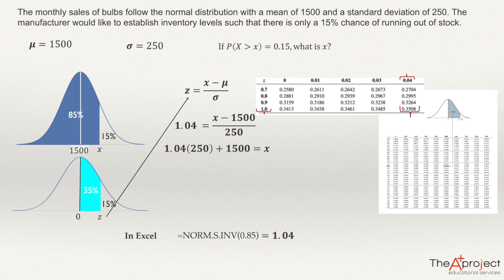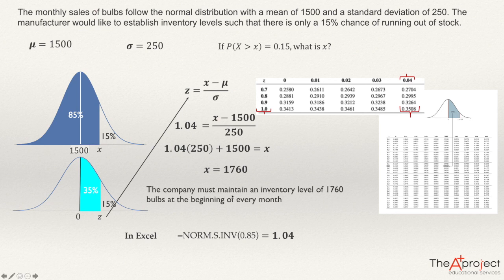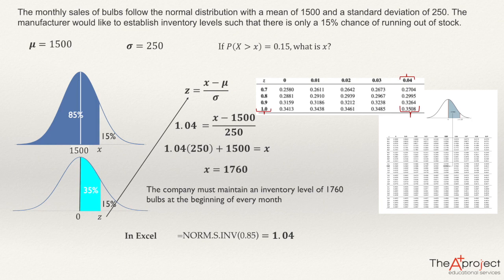Using a calculator, x = 1,760. So the company must maintain an inventory level of 1,760 balls at the beginning of every month. If the company does that, only 15% of the time will it run out of stock. We can find many questions in which we need to find the value x in a normally distributed variable. With that, I finish my explanation of this problem. Thank you.